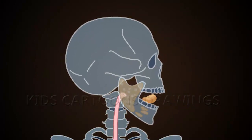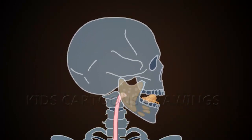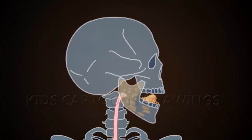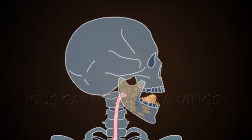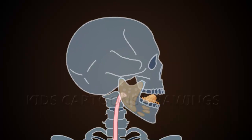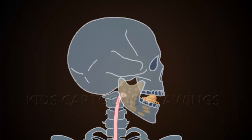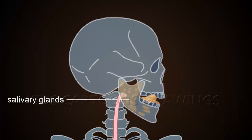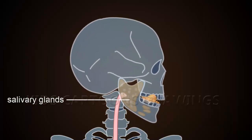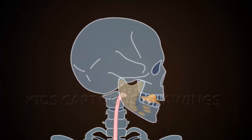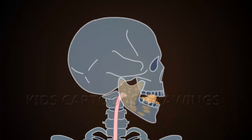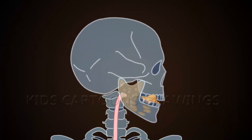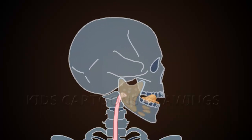Digestion starts in the mouth, also known as the oral cavity. This is the process of mechanically breaking down food. Chemical digestion starts in the salivary glands, which release saliva into the oral cavity. Saliva is rich in amylase and breaks down carbohydrates.